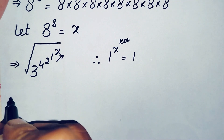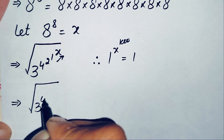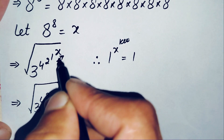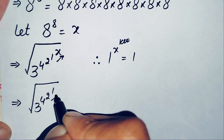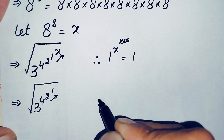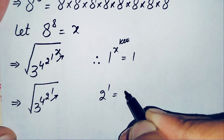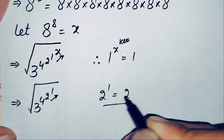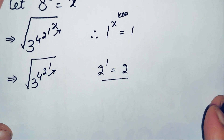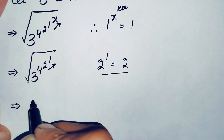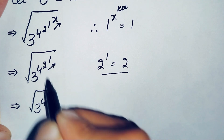This becomes: square root of 3 raised to power 4, raised to power 2, raised to power 1. Now we solve the power 2 raised to power 1. This is very simple — it means we write the base 2 one time. So 2 raised to power 1 is equal to 2. We replace the power 2 raised to power 1 with 2.